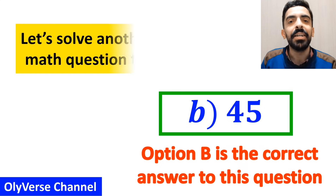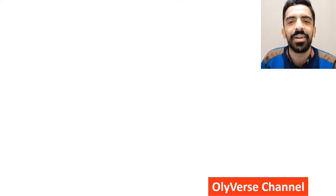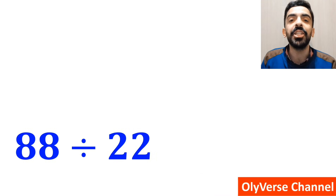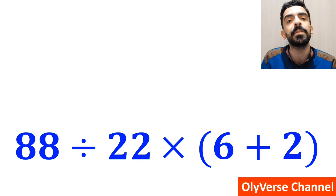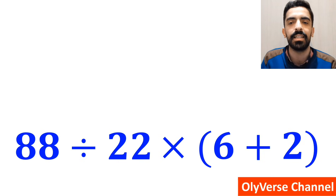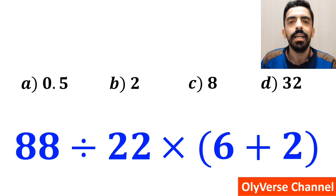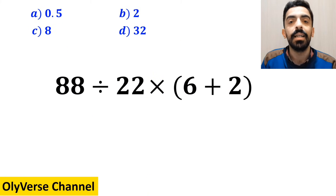Now let's solve another tricky math question together. What is the value of the expression 88 divided by 22 times (6 plus 2)? Which option do you think is the correct answer? Let's take a closer look and solve it together.